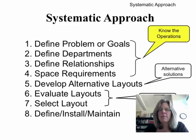So the systematic approach to facilities design, we went over this last time. We were really in this area of knowing the operations. Last time we talked about the problems and how to define them. Now we're going to look at the next three steps: defining departments, defining the relationships, and the space requirements. To do that we need to get a lot of background information and collect information about the company.